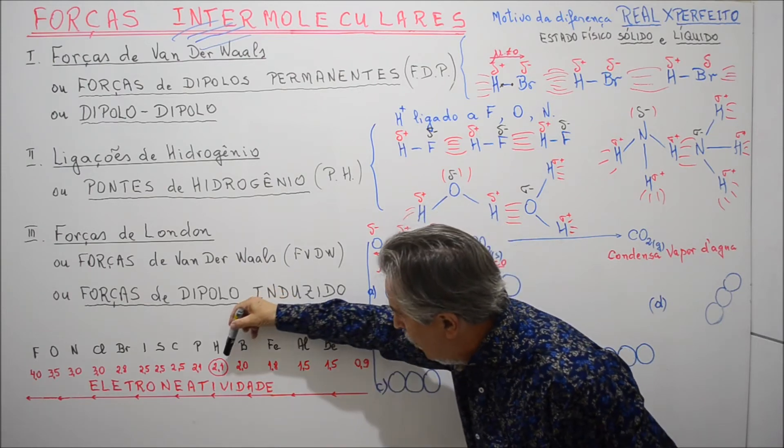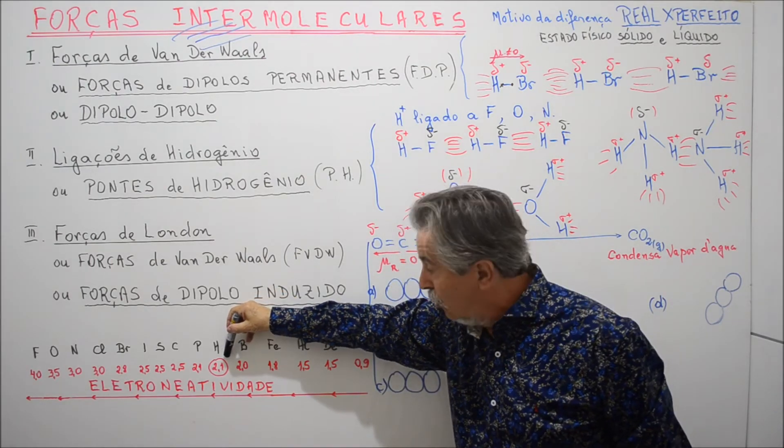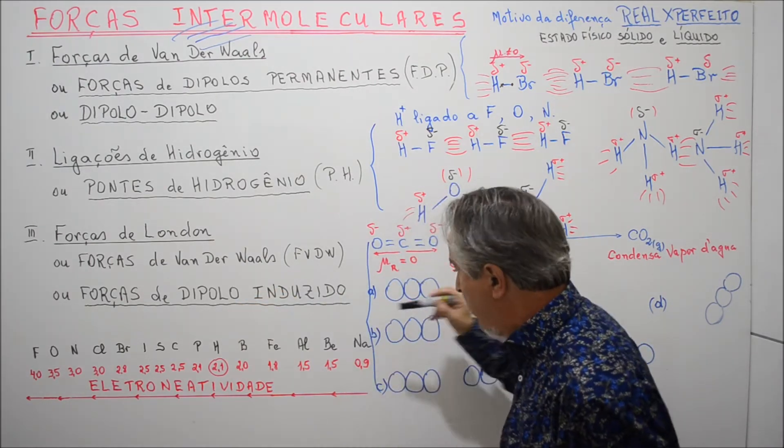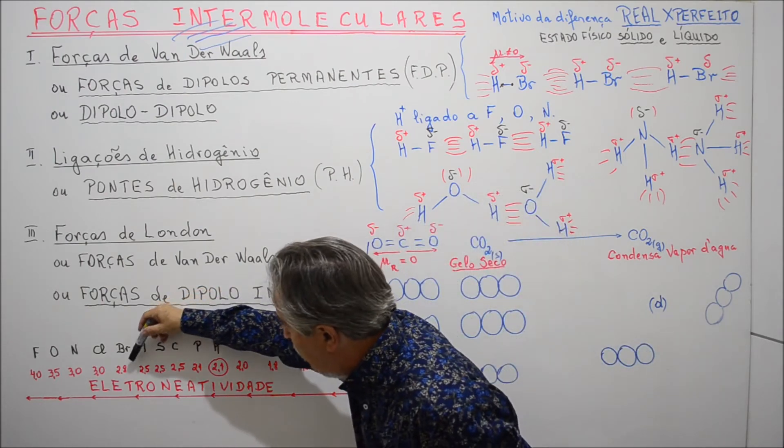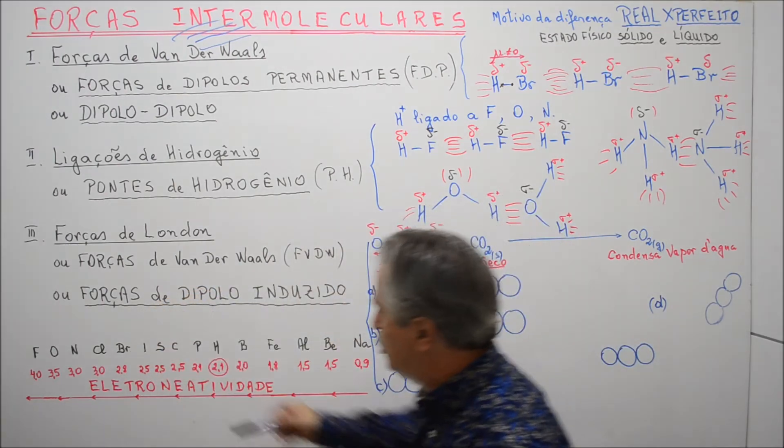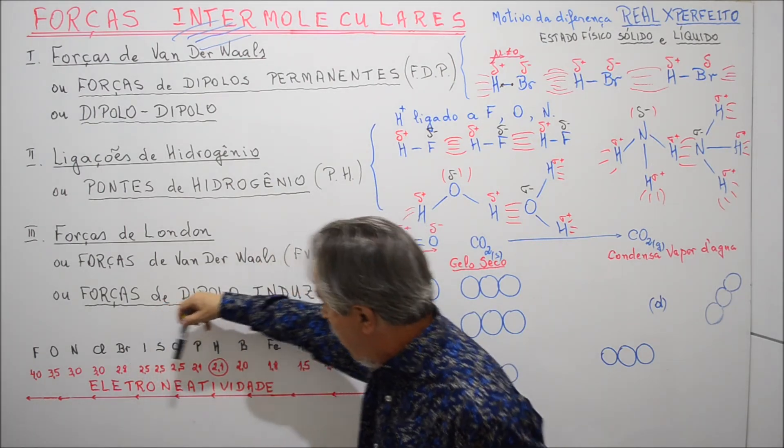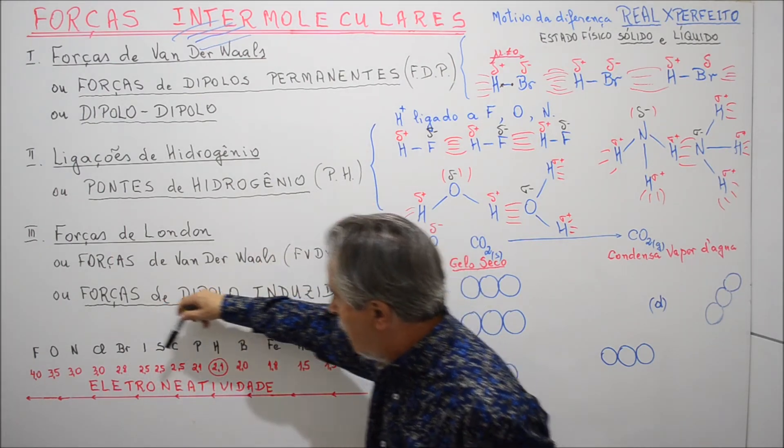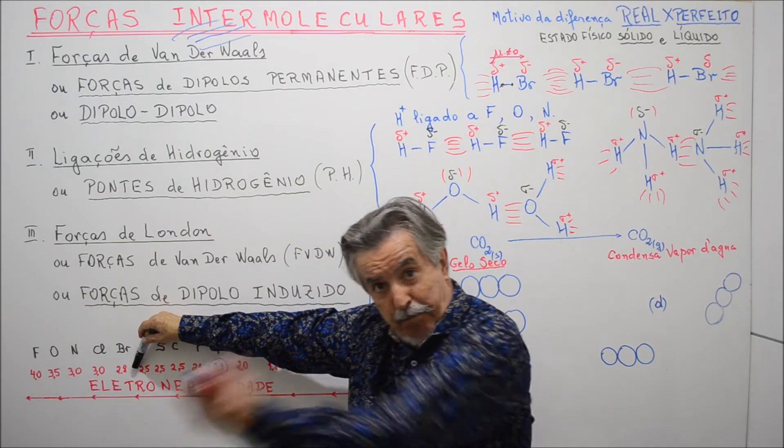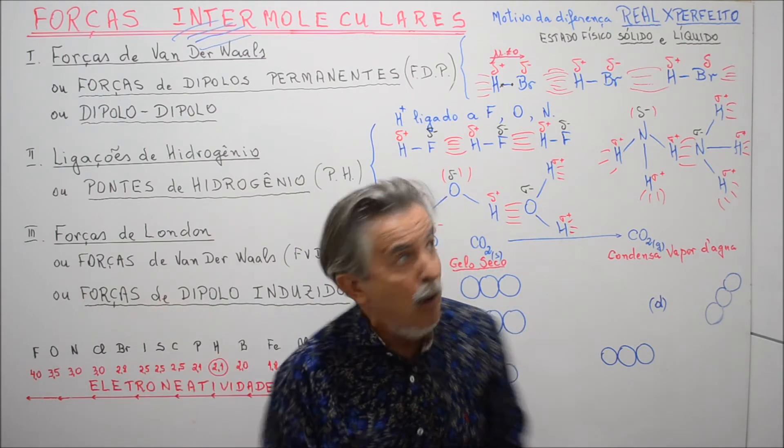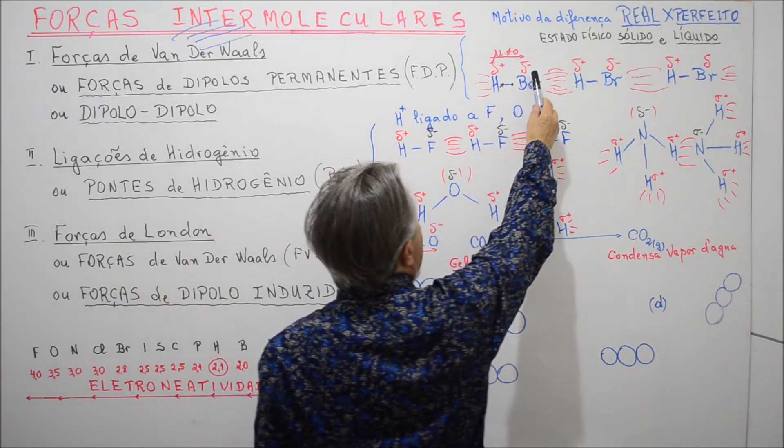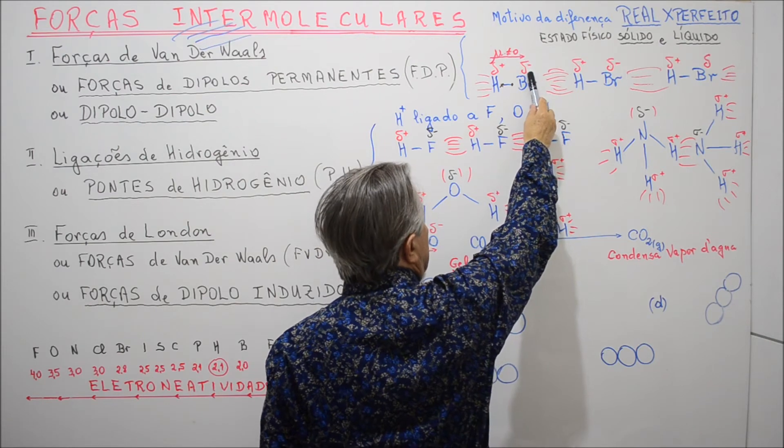Lembra? Onde é que está o H? O H está aqui, puxa com 2.1. E onde é que está o bromo? O bromo está aqui, puxa com 2.8. 2.8 para 2.1, para 2.8, quem puxa mais é o bromo. Então o bromo fica com uma carga negativa.